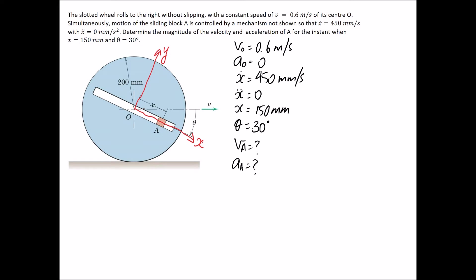My preference is always to put the axis along the slot, but you don't have to — a regular vertical-horizontal coordinate system is also fine. The x, y axes are attached to the circle, so when the circle rotates, so do the axes at the same rate. The z-axis remains out of the page.